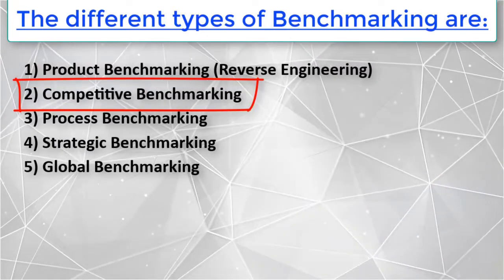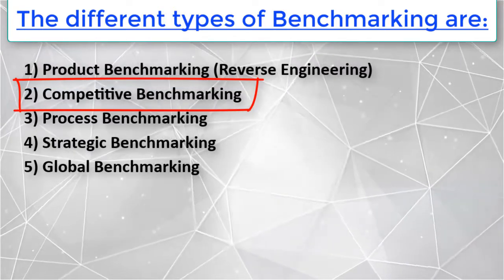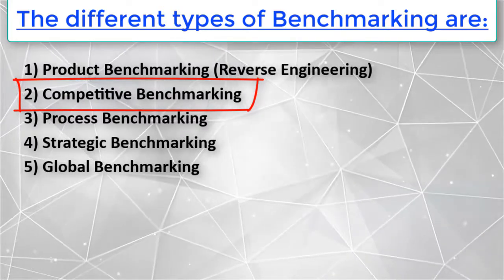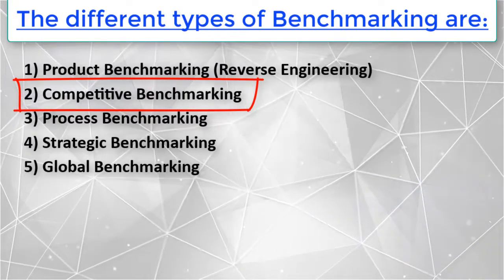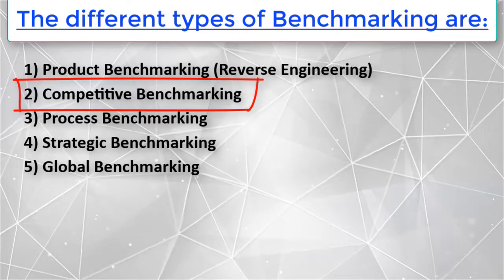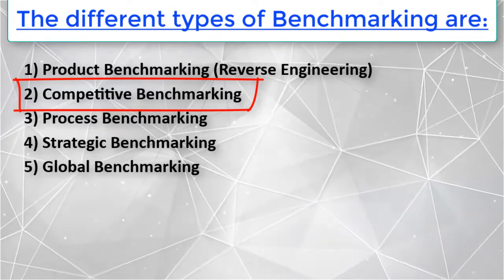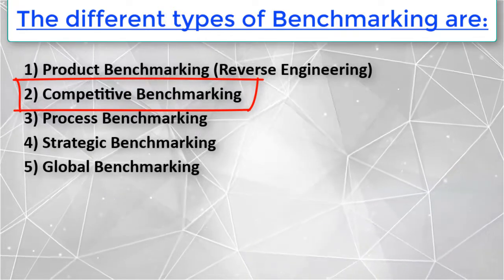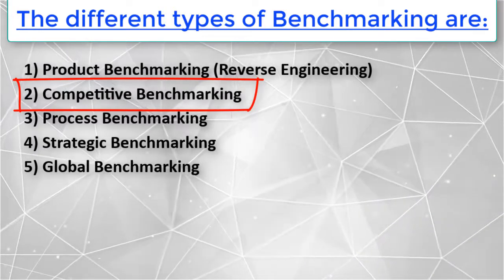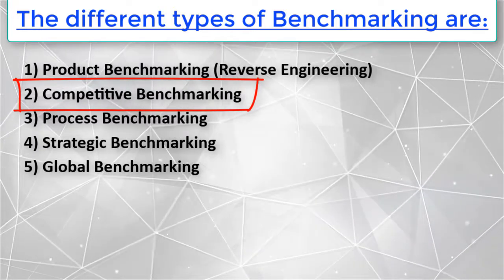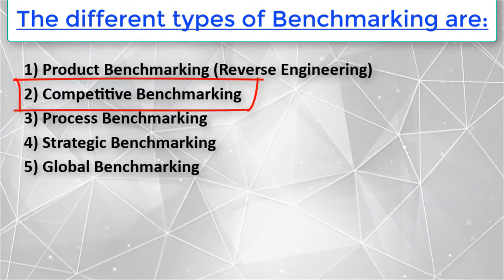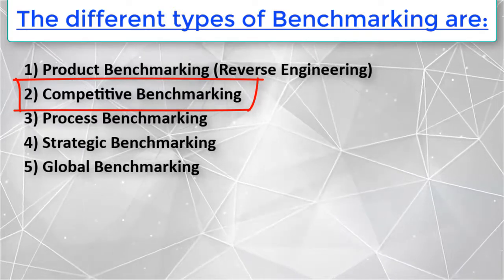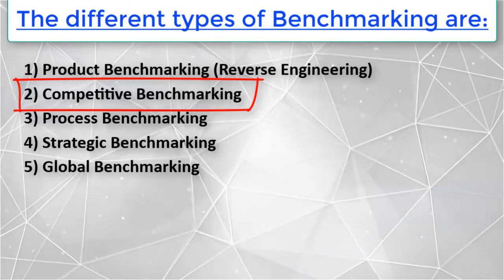The second type is competitive benchmarking. Organizations have moved beyond product-oriented comparisons to include comparisons of processes with those of competitors. In this type, the processes studied may include marketing, finance, HR, R&D, and many more.